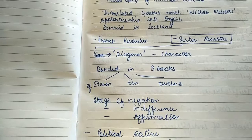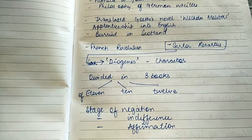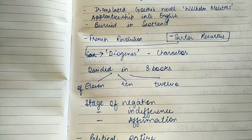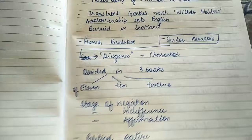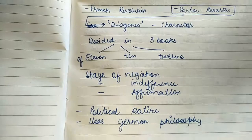In Sartor Resartus there is a character named Diogenes. Sartor Resartus is Latin and means 'tailor re-tailored.' It is divided into three books — of 11, of 10, and of 12 chapters — and there are three stages: the stage of negation, the stage of indifference, and the stage of affirmation.